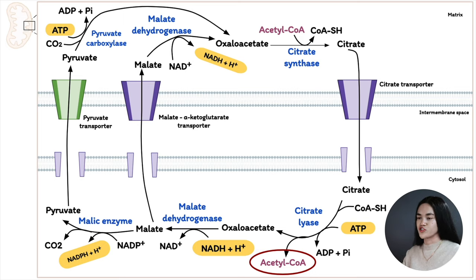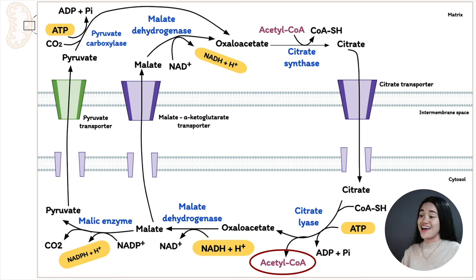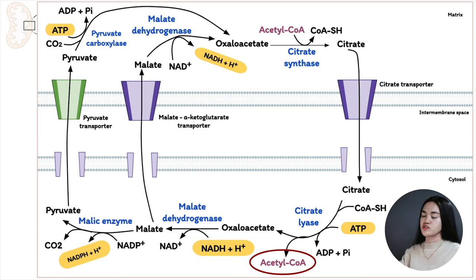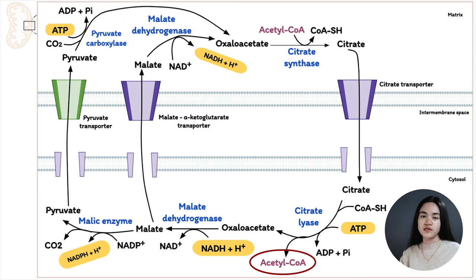Once oxaloacetate is regenerated, it can participate in the citrate shuttle again. Overall, two ATP are used for every acetyl-CoA produced for fatty acid synthesis via the citrate shuttle. The malic enzyme reaction produces half the NADPH needed; the other half comes from the pentose phosphate pathway.